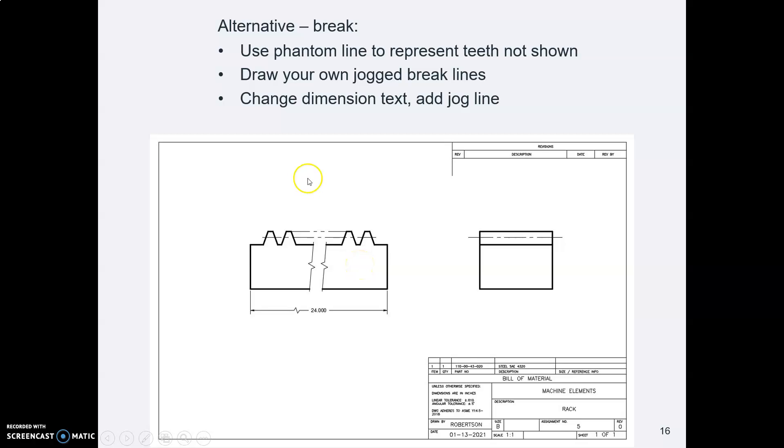And I made a squiggly break line in here. Now, ASME does not tell us how big these squiggles have to be nor what angle they have to be. So, just make something that looks good to you. And you make two of them. Make one break line and then make a copy of it so they're spaced a little bit apart. And trim out your gear in between them.